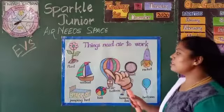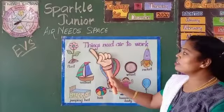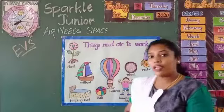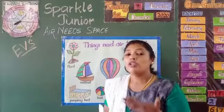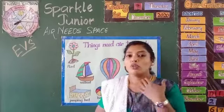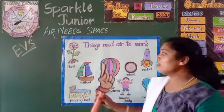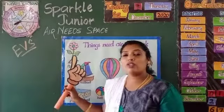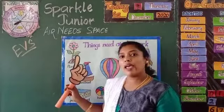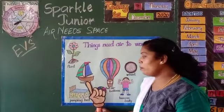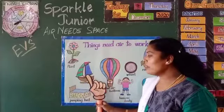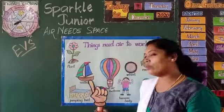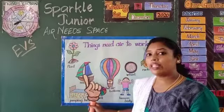Now look at the chart I have stuck behind me. These are the things that need air to work. We need air because we breathe in air and we breathe out air — so the human body needs air. As we have learnt, one of the plant's friends is air, so plants also need air. Next, sailboat. Can you see the mast on the sailboat? If the wind blows, if the air blows only, then the sailboat will move. So, sailboat needs air to work.